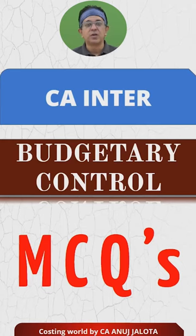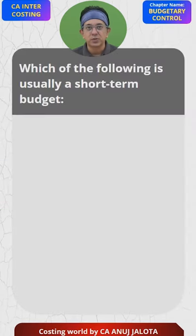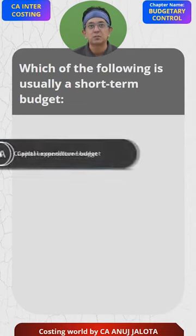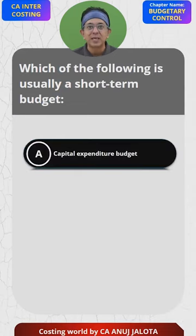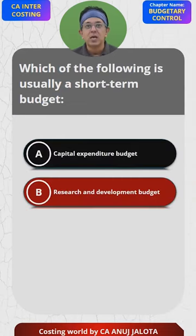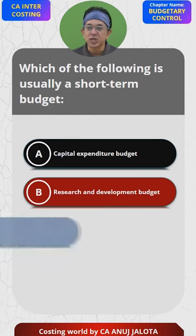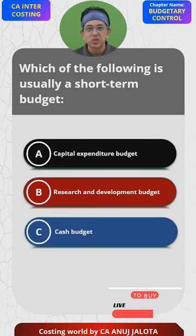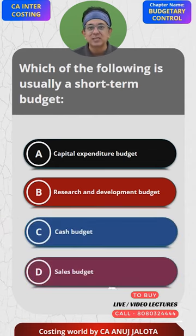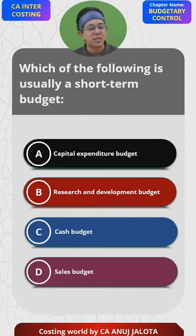CA Inter Budgetary Control MCQs. Which of the following is usually a short-term budget? A: Capital expenditure budget. B: Research and development budget. C: Cash budget. D: Sales budget.